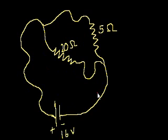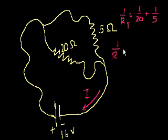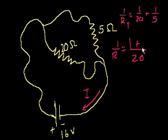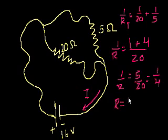First we need to figure out the equivalent resistance, then use Ohm's Law to find the current. We know that 1 over R_total equals 1 over 20 plus 1 over 5. That's 1 over 20 plus 4 over 20, which equals 5 over 20, or 1 over 4. So R_total equals 4 ohms.